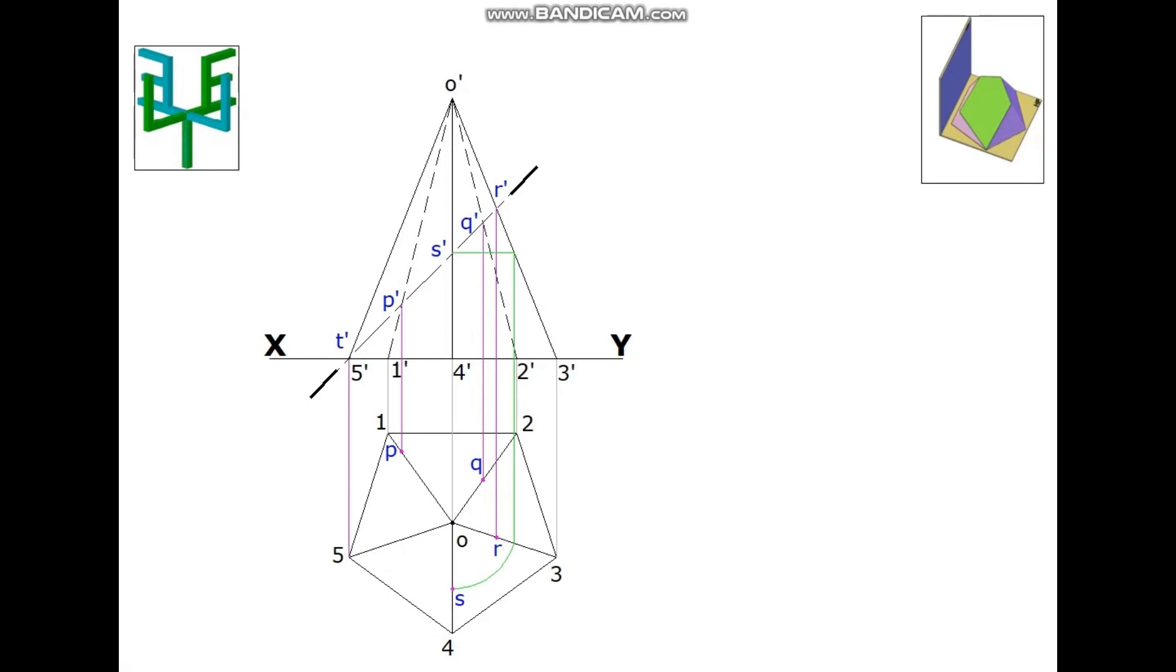Project T' dash. Mark the corresponding point of the plan as T. Since the cutting plane is passing through the base corner, points 5' and T' are the same. Join these points P, Q, R, S, T and P.